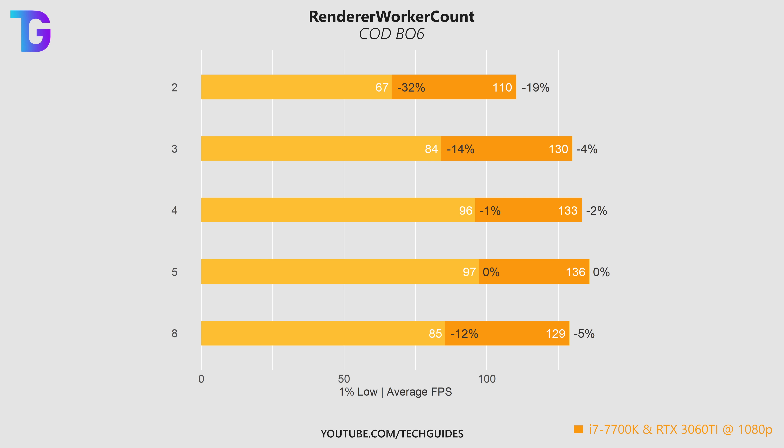For my very CPU-bottlenecked system — an i7-7700K, which is only a 4-core CPU, paired with an RTX 3060 Ti, tested at 1080p — the common recommendation of physical cores minus 1 is truly a horrible recommendation. I'm seeing 14% lower 1% lows and a 4% reduction in average FPS compared to the best value, which on this system is physical cores plus 1. My guess is that in cases where your system is very CPU-bottlenecked and you're not playing at a high resolution, increasing the renderer worker count gives the game a little more to work with and actually boosts performance quite a bit. So if you have a 4-core CPU and are playing at 1080p, setting this value to 5 might yield the best performance.